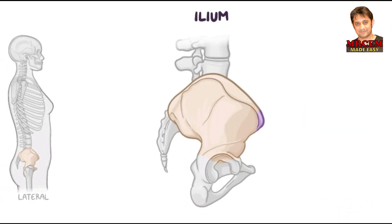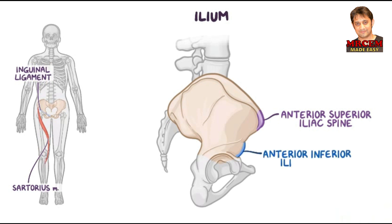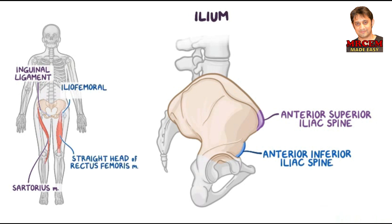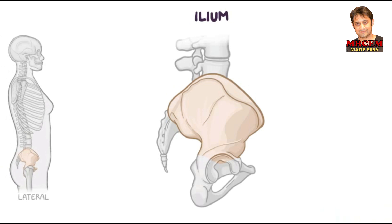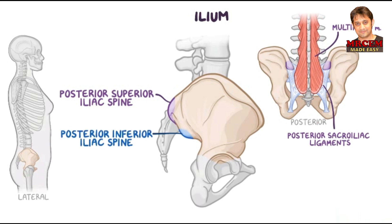The anterior border presents the anterior superior iliac spine superiorly, where the inguinal ligament and the sartorius muscle attach. Underneath it, there's the anterior inferior iliac spine, where the straight head of the rectus femoris muscle and the iliofemoral ligament of the hip joint attach. The posterior border has a posterior superior iliac spine, where the oblique portion of the posterior sacroiliac ligaments and the multifidus muscle attach. Underneath it, there's a posterior inferior iliac spine, below which is a deep notch — the greater sciatic notch.